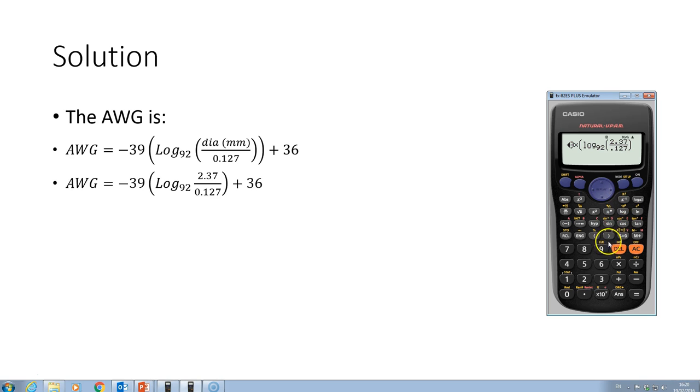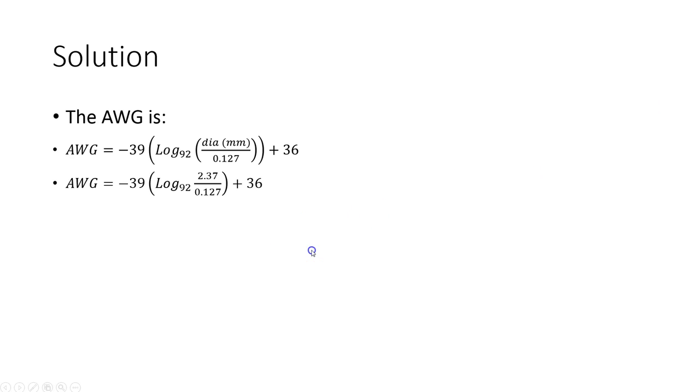And then I'm going to close off that bracket. And then we're going to add the 36. And that gives me a 10.75, which means when I actually specify the wire, I'll round down. And I'll use a gauge 10.